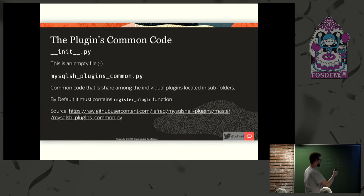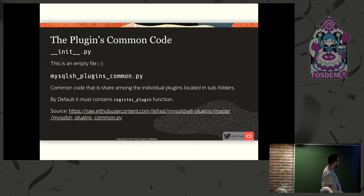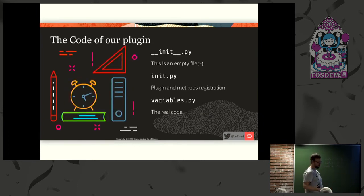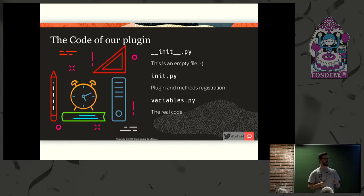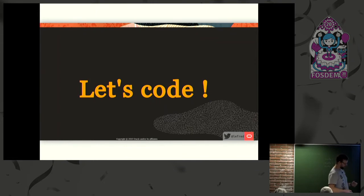You can find the common file on GitHub or I will show you what's in it — it handles all the registration of the plugin for the shell, so you don't need to do that every time you call the shell. Then the code of our plugin: another empty init file. Then method registration — all the methods we're going to create in the real code, we need to register them. Something very nice about the plugin infrastructure of the shell is that it will create all the help for me automatically. I don't need to write that.